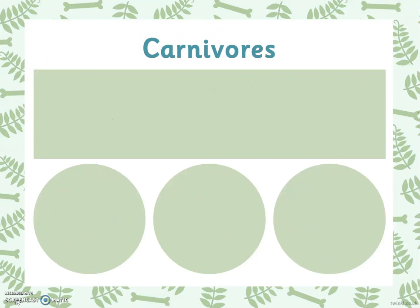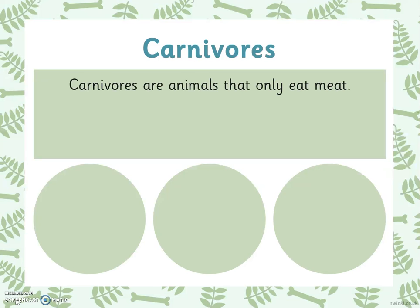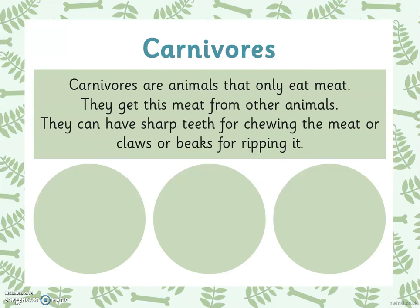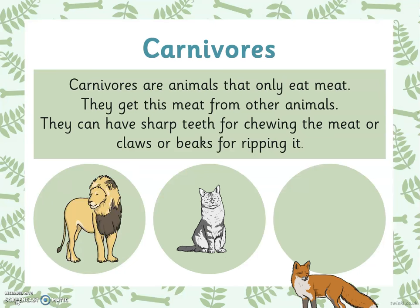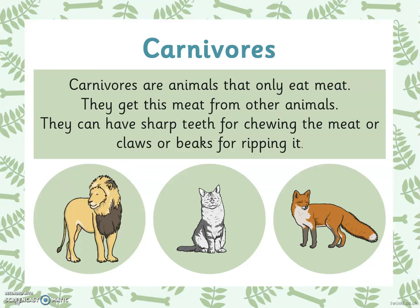The second group are called carnivores. Carnivores are animals that only eat meat. They get this meat from other animals. They can have sharp teeth for chewing the meat or claws or beaks for ripping it. Here are some animals that are carnivores. All of these animals only eat meat.